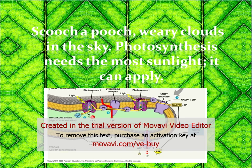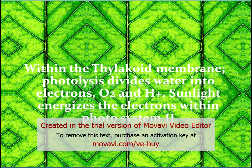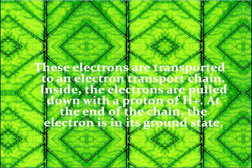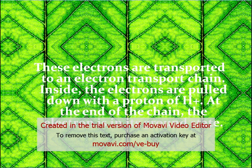Within a thylakoid membrane, photolysis divides water into electrons, O2, and H+. Sunlight energizes the electrons within Photosystem II. These electrons are transported to an electron transport chain, where the electrons are pulled down with a proton of H+. At the end of the chain, the electron is in its ground state.